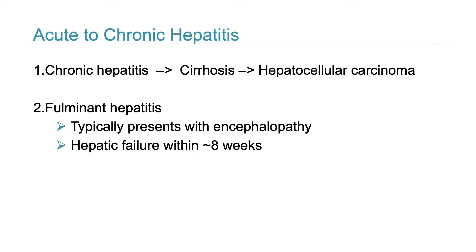If symptoms continue or the virus persists for more than 6 months, viral hepatitis transitions from acute to chronic. At this point, inflammation mostly occurs in the portal tract. If inflammation and fibrosis continue, this may progress to post-necrotic cirrhosis. These patients often present with fulminant hepatitis, with clinical presentations including encephalopathy, and patients may develop hepatic failure within 8 weeks.